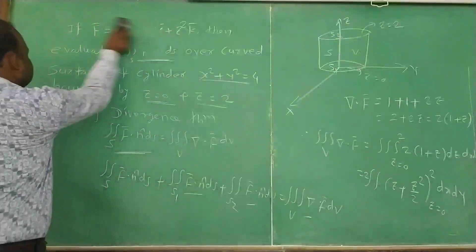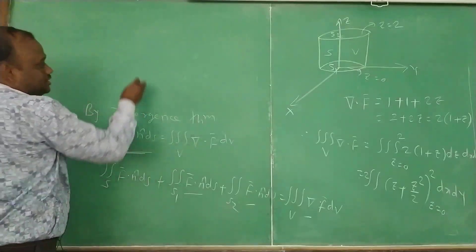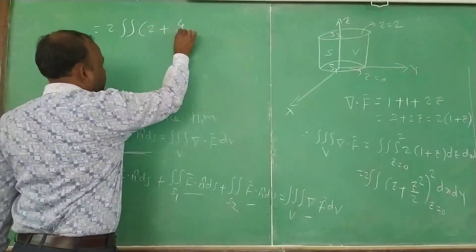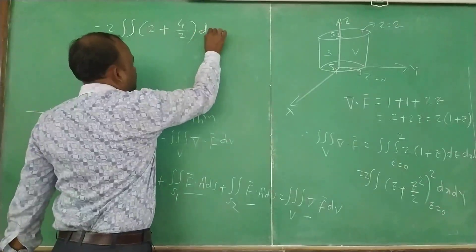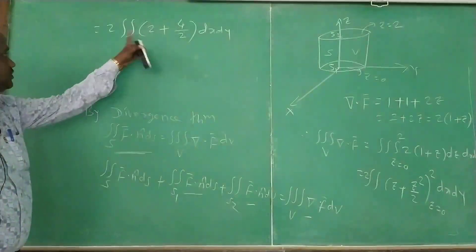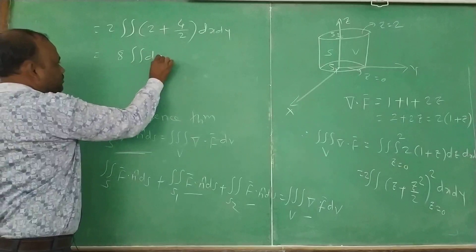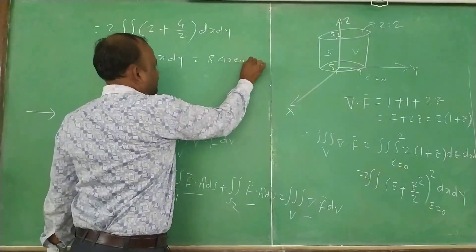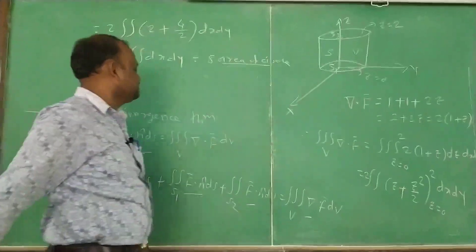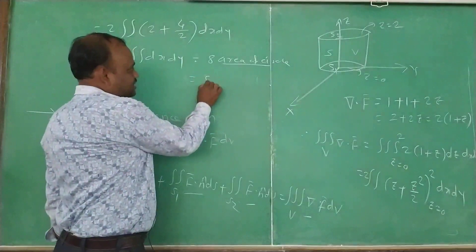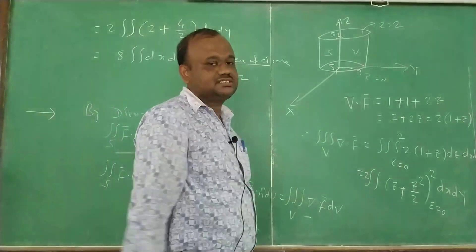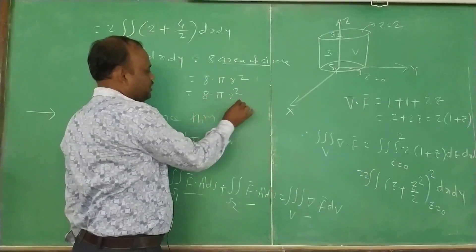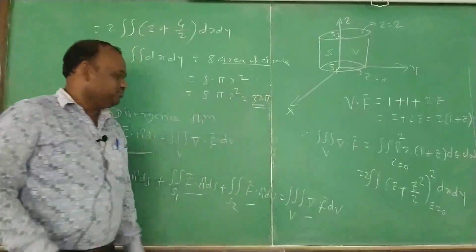Applying the limits, the upper limit z=2 gives 2 + 4/2 = 2 + 2 = 4, and the lower limit gives 0. So we get 2 × 4 = 8 times the double integral of dx dy. This double integral is the area of the circle x² + y² = 4, which has radius 2. So the result is 8 × π × 2² = 8 × 4π = 32π.